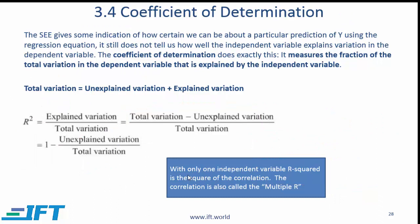In this particular reading we only use one independent variable. When that is the case, when you only have one independent variable, then the R squared, so this by the way, this coefficient of determination is the R squared.